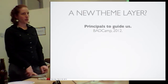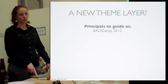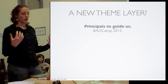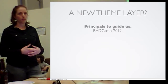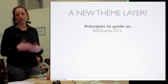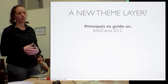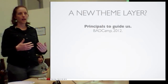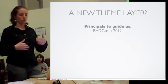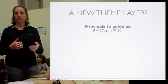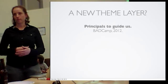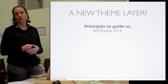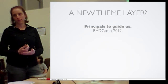At the end of BADCamp last fall we had a theme sprint where we tried to figure out what principles we should follow while designing a new theme layer. Every time we have to make a decision about whether to do something, we needed a rule book — a manifesto — to consult and say: does this fit our principles? And if so we should do it, and if not we should figure out how to make it align.